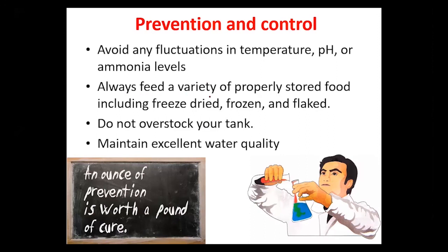For prevention and control, avoid any fluctuation in temperature, pH, and ammonia levels. Always feed a variety of foods, do not overstock the tanks, and maintain excellent water quality to prevent the disease in the fishes.